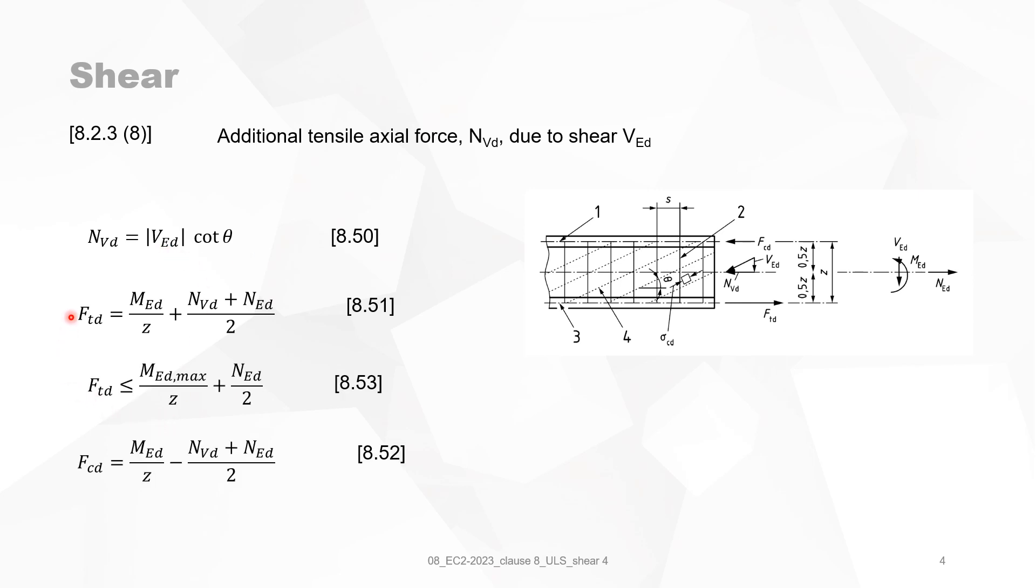There is a maximum to the tension in the tension cord. And that maximum of FTD must be smaller than the maximum bending moment divided by Z, which is an approximation, plus NED over 2. And the compression force or the force in the compression cord is then, of course, the same as that of FTD, but instead of plus, it's minus.